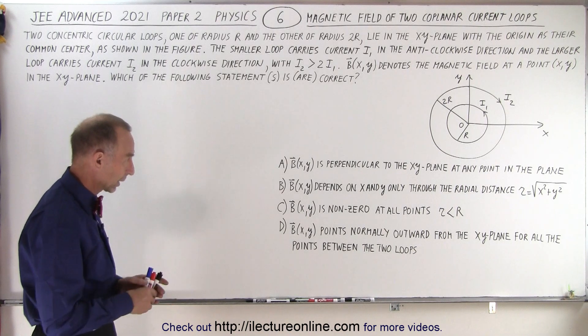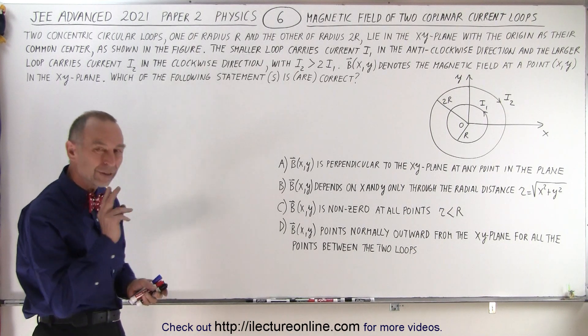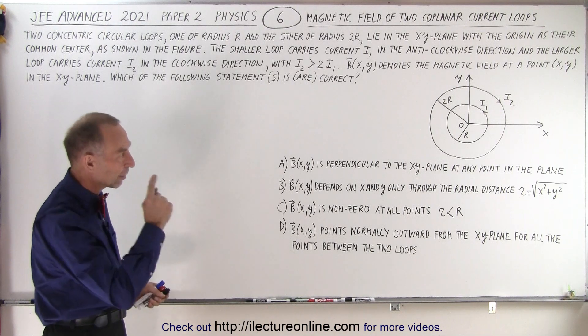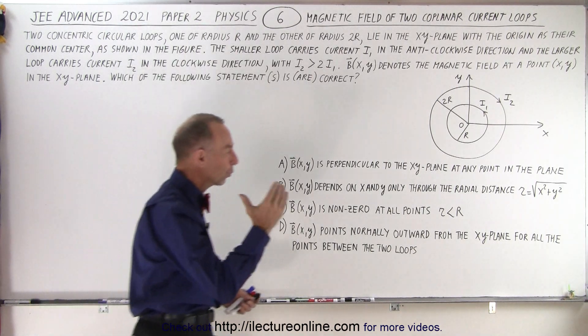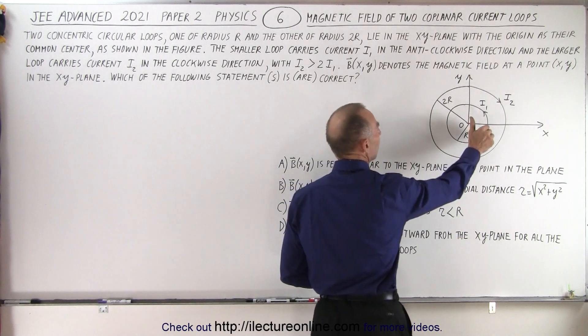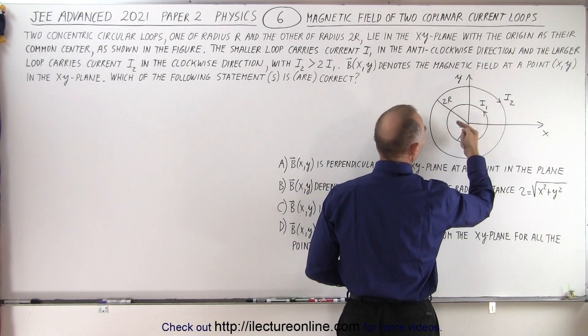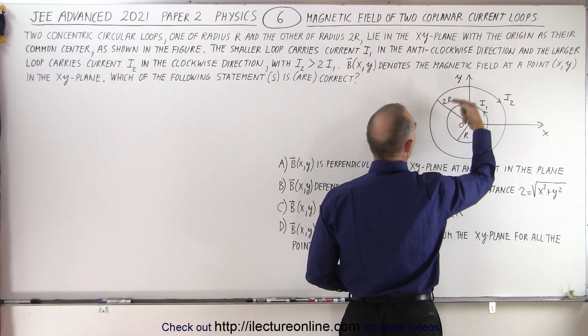How can we solve this one quickly? Well, first of all, there's two things we need to understand. Whenever there's a current loop, there's a magnetic field that circles around the loop. We use our right hand, put our thumb in the direction of the current and we can see that the B field, the magnetic field, will go around the current like this.